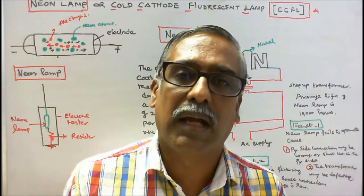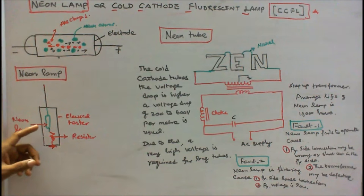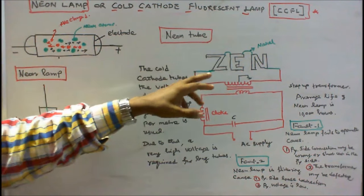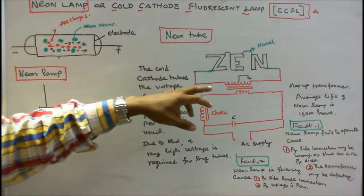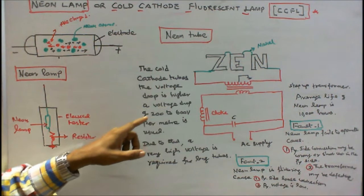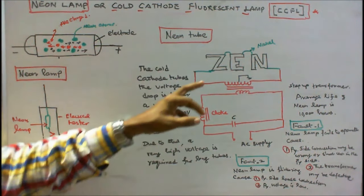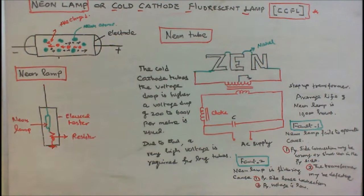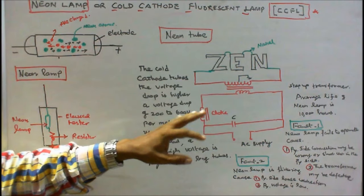Now we see the connection of neon lamps and neon tubes. In the electrical tester, one neon lamp is present and a resistor is connected in series with the neon lamp to minimize the current. For the neon tube, the letters — for example 'EZEN' — are connected with nickel wires to a step-up transformer. In cold cathode tubes, the voltage drop is higher; a voltage drop of 200 to 600V per meter is usual, which is why a step-up transformer is required for long tubes. The average life of a neon lamp is 10,000 hours, and a capacitor is connected on the primary side to improve the power factor.